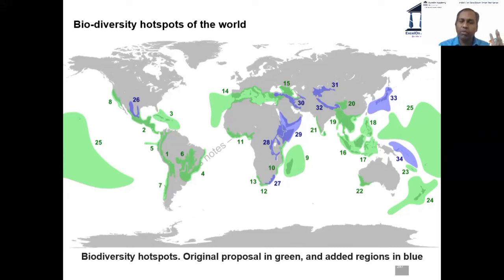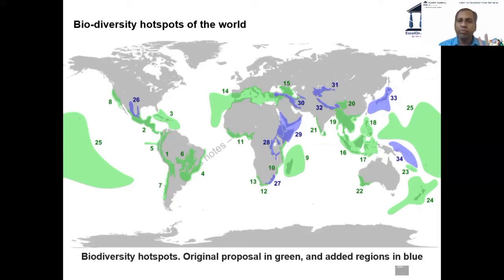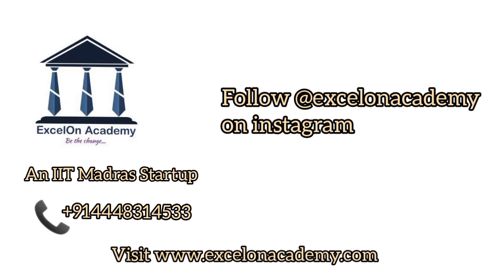So that covers biodiversity hotspots — a simple theoretical concept: what is a biodiversity hotspot, what are the two criteria, globally how the distribution of hotspots looks, and India-wise how the biodiversity hotspots are distributed. These are the three to four key points we discussed and understood when it comes to biodiversity.